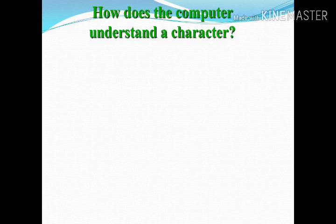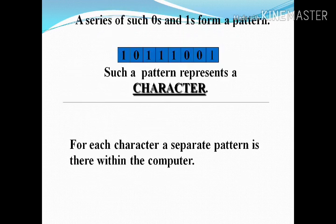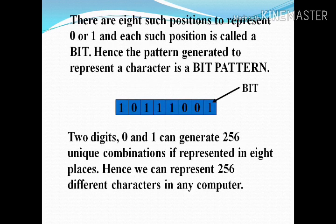A character is the minimal part. How does a computer understand our characters? A character means a set of instructions. There are two types of instructions — voltage and non-voltage states, represented as one and zero. A character is eight bits, and the set of zeros and ones represents the data. There are 256 unique combinations to represent eight bits of a character.